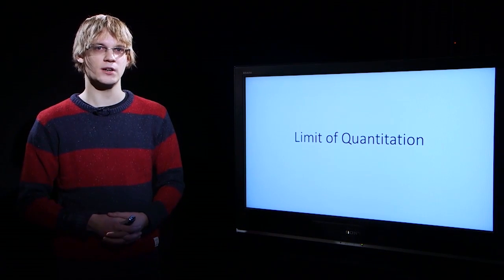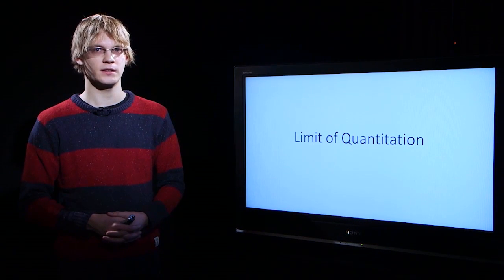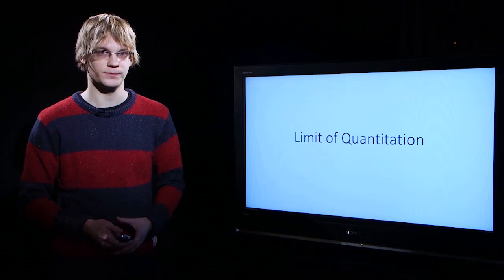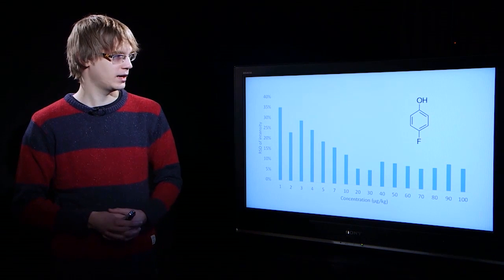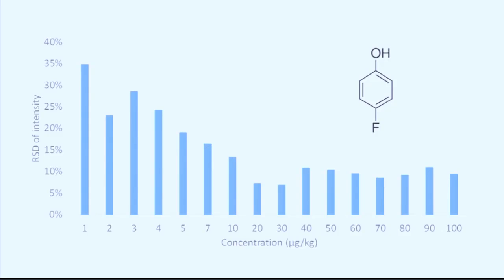In this video we will start discussing the topic of limit of quantitation. Here we have an example of an analyte that has been measured 10 times at each concentration. The relative standard deviations at each concentration have been calculated. It can be seen that as the concentration increases, the relative standard deviation decreases.